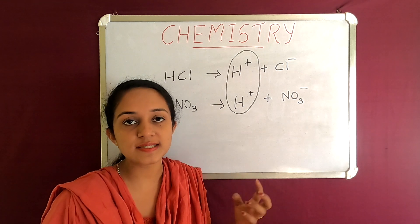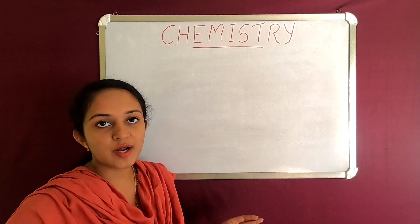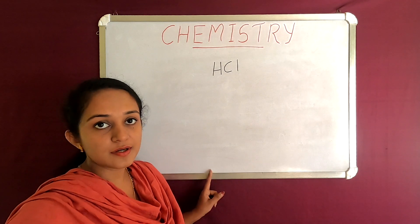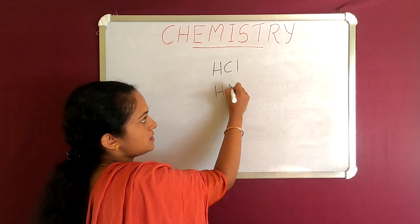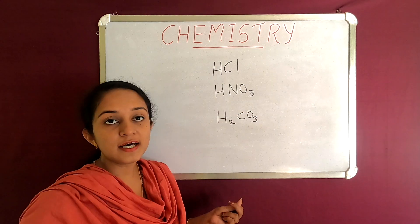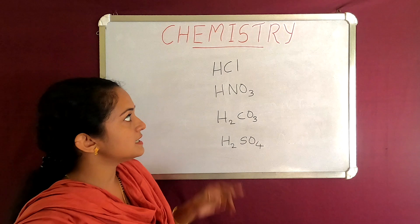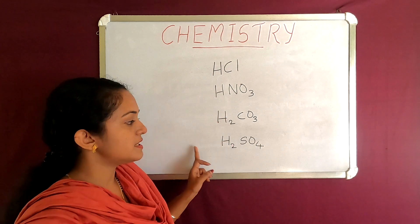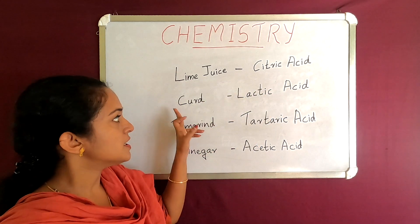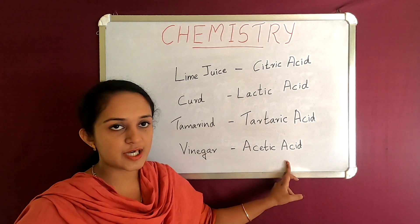You can taste weak acids as they have a soft sour taste. We have a few acids and their chemical formulas. Hydrochloric acid: HCl. Nitric acid: HNO₃. Carbonic acid: H₂CO₃. Sulfuric acid: H₂SO₄. This is lime water. Lime juice is citric acid. Curd is lactic acid. Tamarind contains tartaric acid. Vinegar is acetic acid. These are weak acids. That is why they have a sour taste.